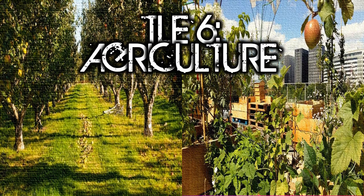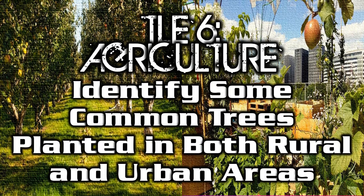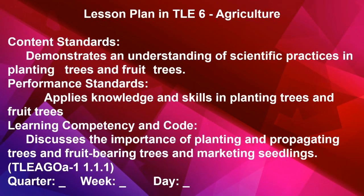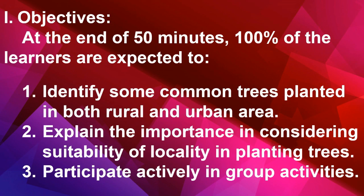TLE 6 Agriculture: Identify some common trees planted in both rural and urban areas. At the end of 50 minutes, 100% of the learners are expected to identify some common trees planted in both rural and urban areas, explain the importance in considering suitability of locality in planting trees, and participate actively in group activities.